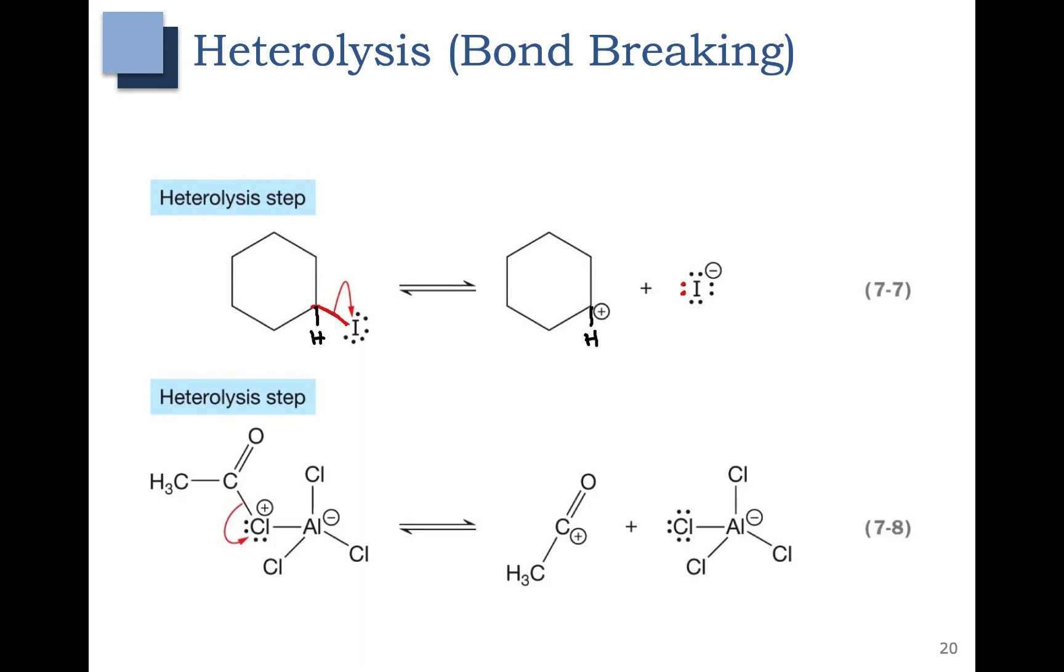Here's another example of a heterolysis or bond breaking step. In this step the carbon chlorine bond in red here is breaking and those electrons are going to the chlorine. So this carbon chlorine bond here becomes the red lone pair in the product. In this case we started off with a positive and negative charge on the left and our products have a positive and a negative charge. So overall on the left is neutral and overall on the right is neutral.